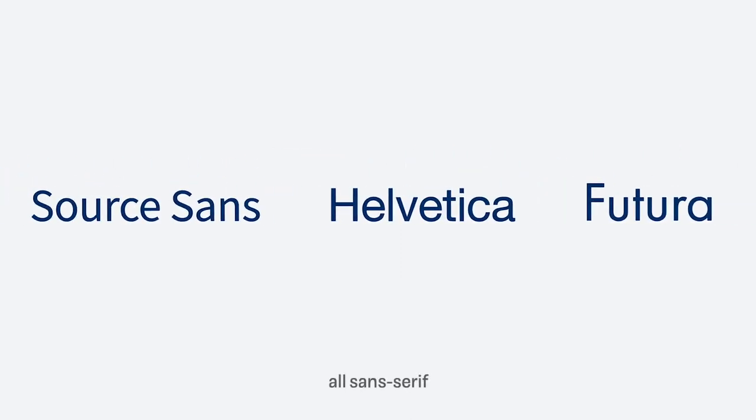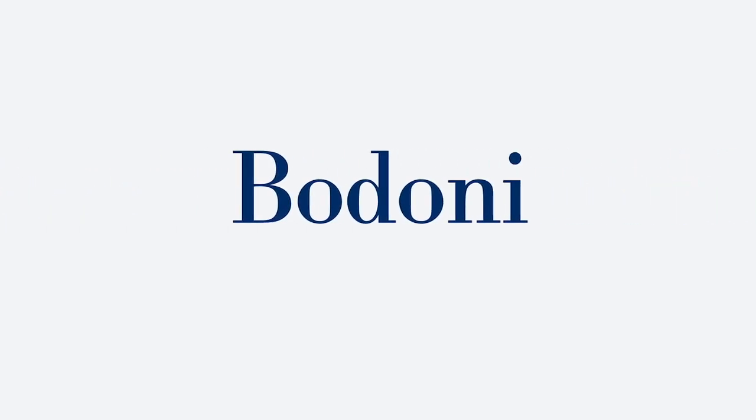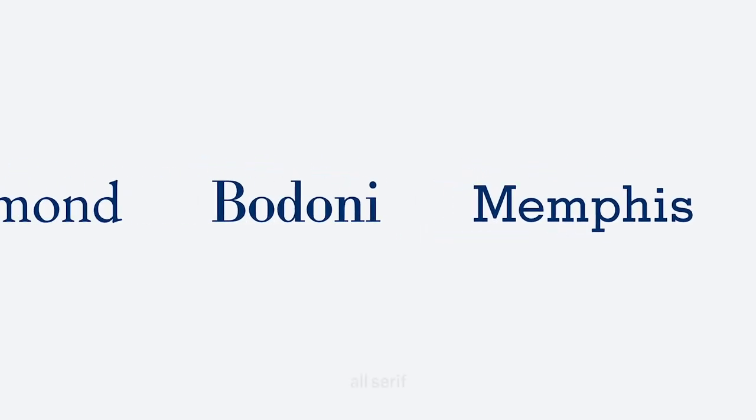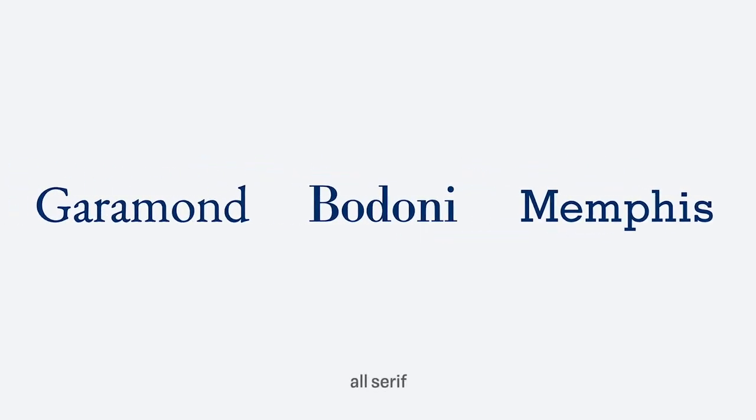When pairing fonts, a common advice is to mix a sans and a serif typeface. But does this really always work? When you look at Source Sans, Helvetica, or Futura — all sans serif typefaces — are they all the same? Not really. On the other hand, Garamond, Bodoni, and Memphis are all serif typefaces, and again, they feel very different.